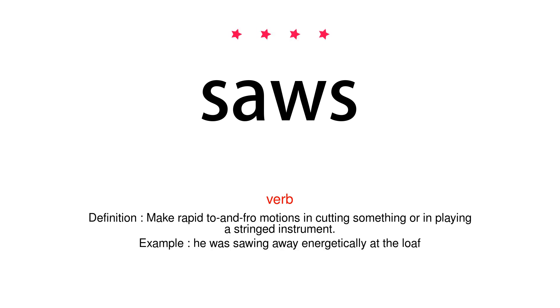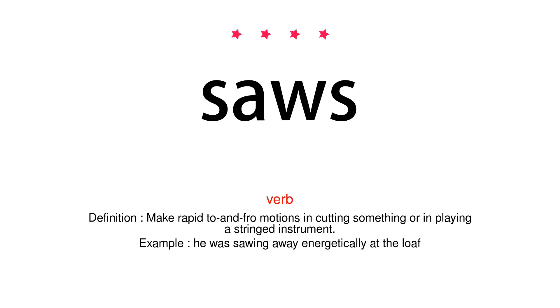Verb. Definition: Make rapid to and fro motions in cutting something or in playing a stringed instrument. Example: He was sawing away energetically at the loaf.